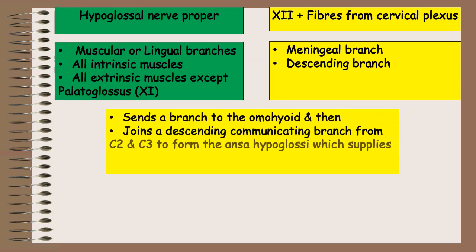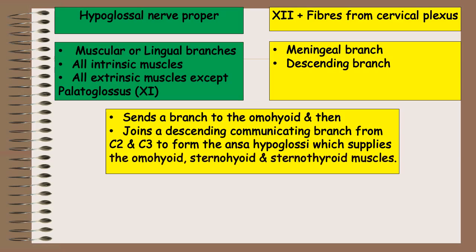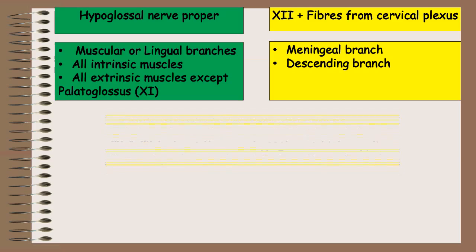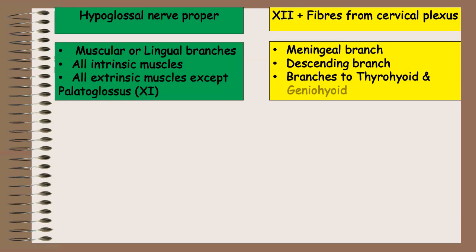The second branch is the descending branch, which sends a branch to the omohyoid and then joins a descending communicating branch from C2 and C3 to form the ansa hypoglossi, which supplies the omohyoid, sternohyoid, and sternothyroid muscles. The last branches are to the thyrohyoid and geniohyoid muscles.